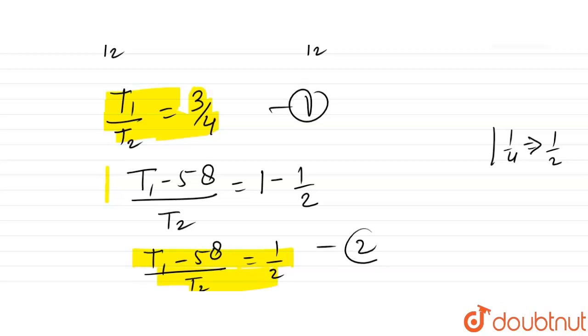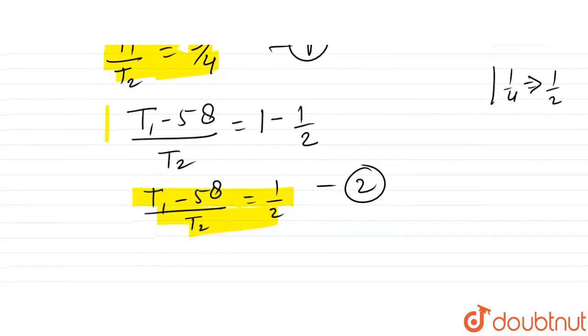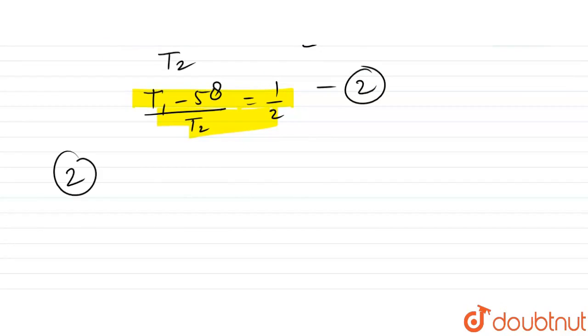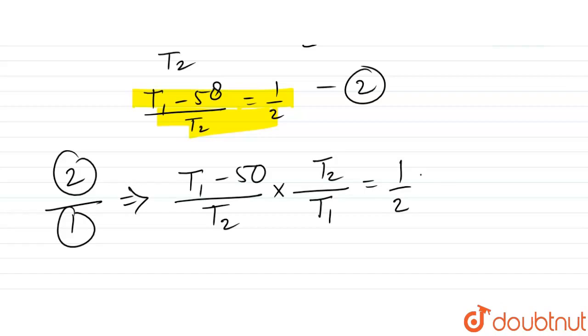Equation 1 and equation 2. Now dividing equation 2 by equation 1. So (T₁ - 58)/T₂ divided by T₁/T₂. The ratio of 1/2 to 3/4. T₂ cancels out, and this becomes (T₁ - 58)/T₁. This equals 2/3.